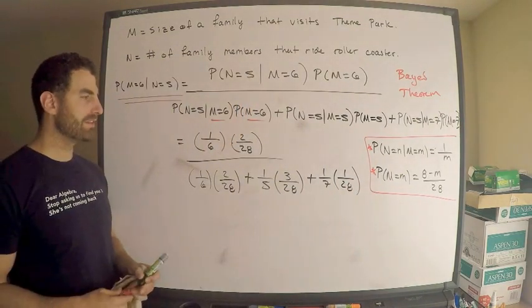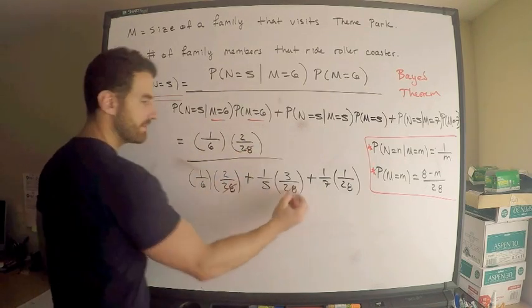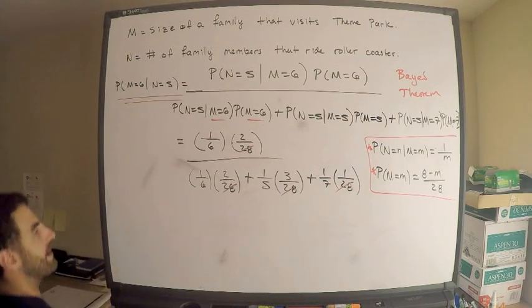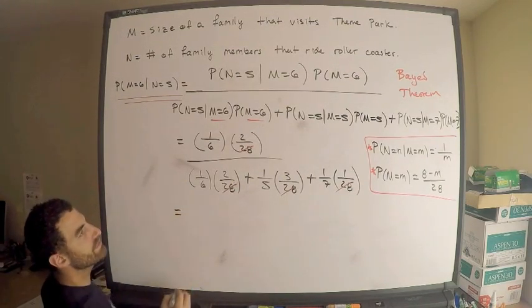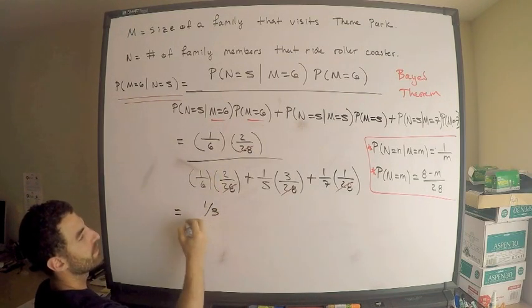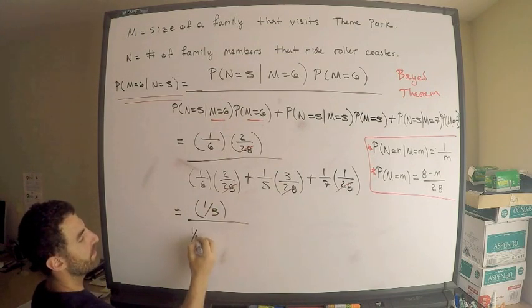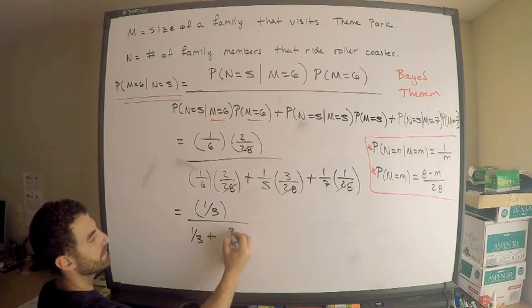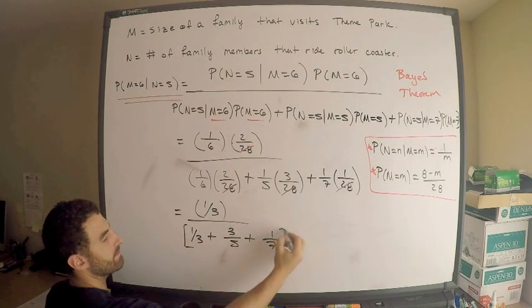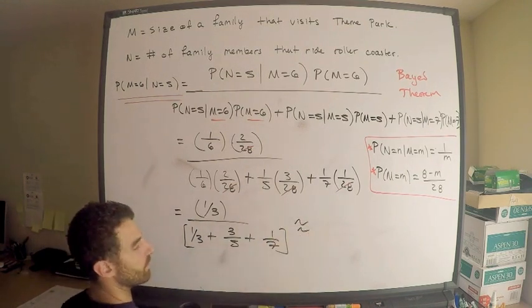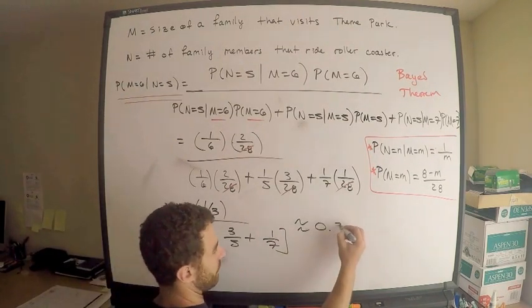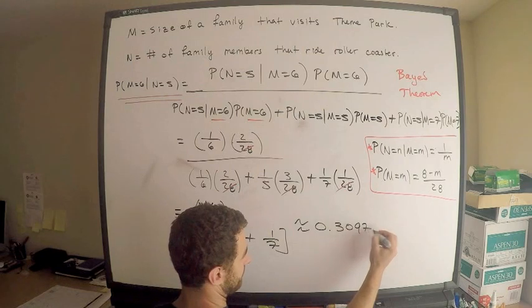I'm just going to do a little bit of cleanup here. I can get rid of the 28s. There's a 28 in the denominator of all of these expressions. So it looks to me like I have the following. And I mean this is really just calculator work. I'll write one more step. 2 over 6, this is one-third, divided by one-third plus three-fifths plus one-seventh. And that's all in the denominator here. And this is approximately 0.3097.